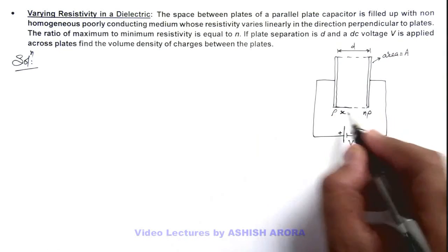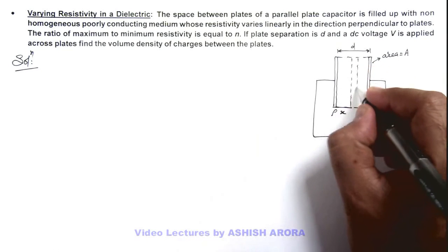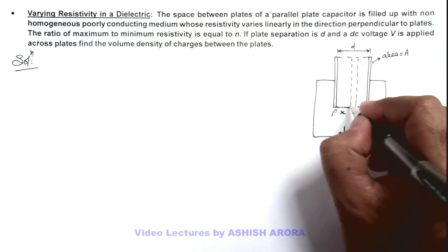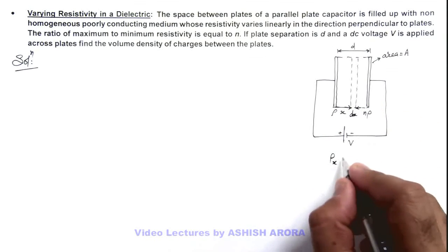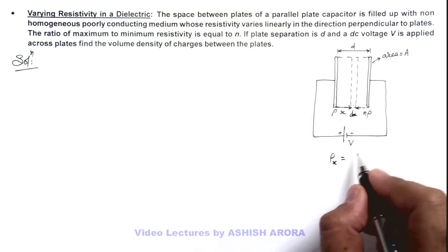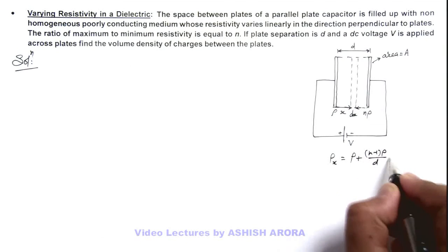So at a distance x, if we consider an elemental slab which is of width dx, then here resistivity ρ as a function of x, the linear variation we can write it as ρ₀ plus (n-1)ρ₀/d multiplied by x.